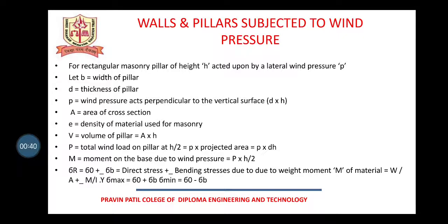For all these 4 types, you have to follow the steps which I have written over here. That is, if I am talking about rectangular section, for rectangular masonry pillar of height h acted upon by lateral wind pressure p, I can say that b is the width of the pillar, d is the thickness of the pillar.